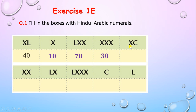Can you tell the value of XC? The value of XC is 90. X is smaller than C — the value of X is smaller than the value of C — so we need to do subtraction. X stands for 10 and C stands for 100, so 100 minus 10 equals 90.